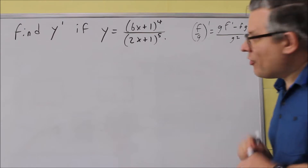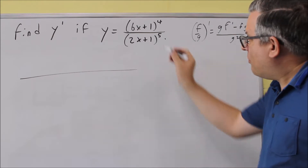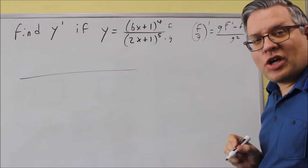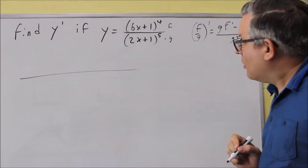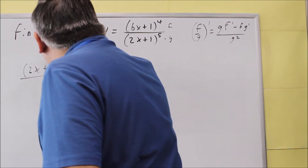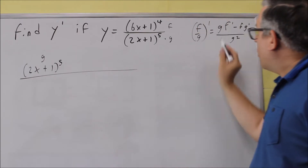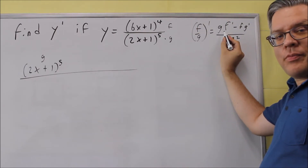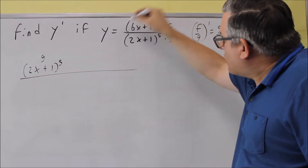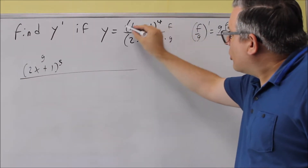The quotient rule says we're going to do the bottom times the derivative of the top. The top is always F, the bottom is always G. So we start with the bottom, 2x plus 1 to the fifth power — that's our G. Now we do times the derivative of the top, which requires a chain rule: derivative of the outside times the derivative of the inside.